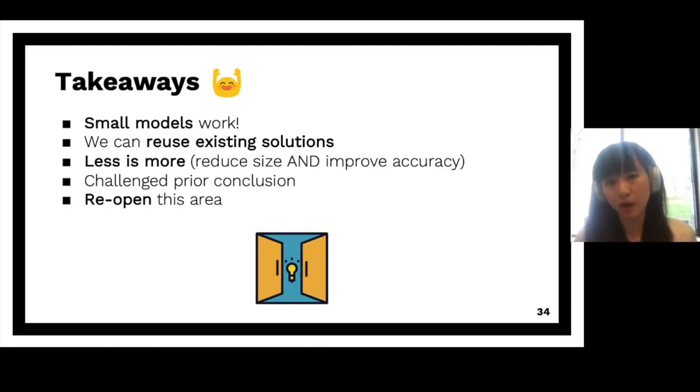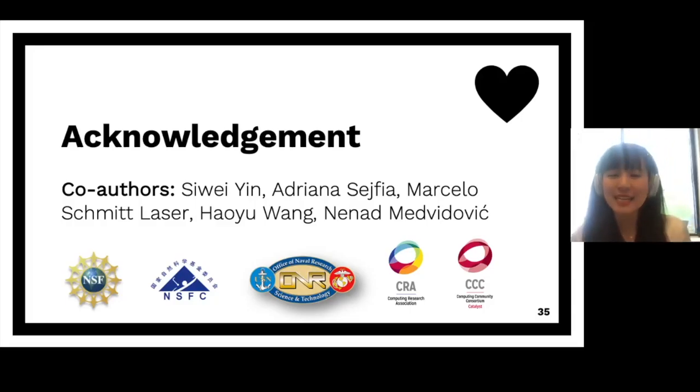And also, we found less is more. In some cases, not only can the data pruning reduce the model's size significantly, but they can also improve the model's accuracy in some cases at the same time. And what's more interesting is that this finding actually challenged a prior conclusion that said history-based prefetching is not effective on mobile platforms. So our results show that this is a very promising direction that reopens this area, hopefully can encourage more work in this domain.